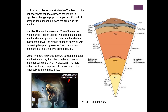The mantle makes up 82 percent of the Earth's interior and is broken into two sections: the upper mantle, which is rigid, and the lower mantle, which is plastic — meaning it's flexible and can flow. The mantle changes behavior with increasing temperature and pressure. As you go deeper into Earth, layers encounter higher temperatures and pressures, which makes the rocks more plastic — a concept very important to plate tectonics.